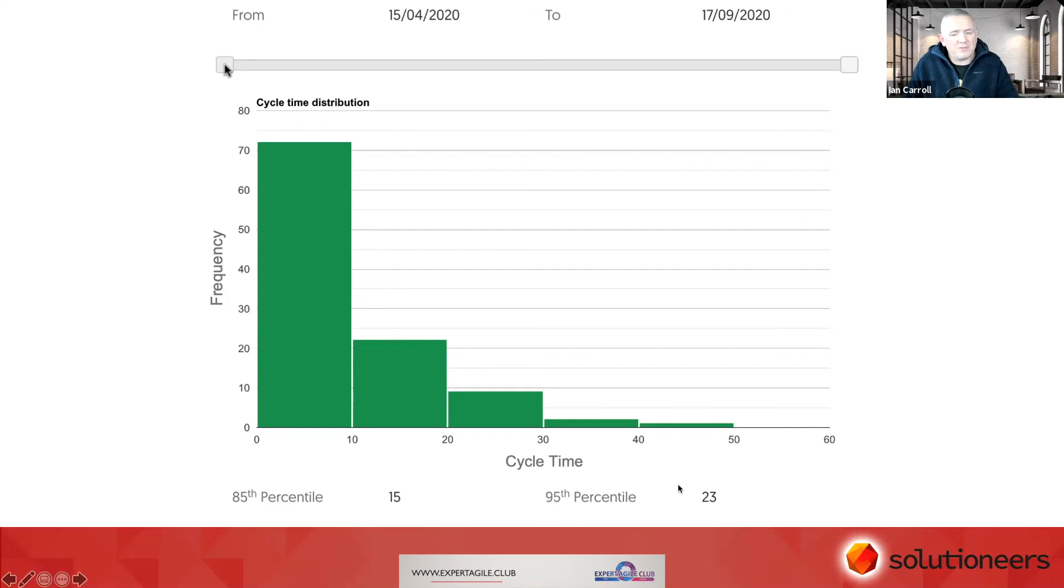And if that's not enough confidence for us, if we want 95% confidence, then we'd look at 23 days as the 95th percentile. So there's a little bit of an introduction to percentiles and distributions there. This plays a really important part when we're talking about dependency management. Okay, but we'll come back to that in a minute.